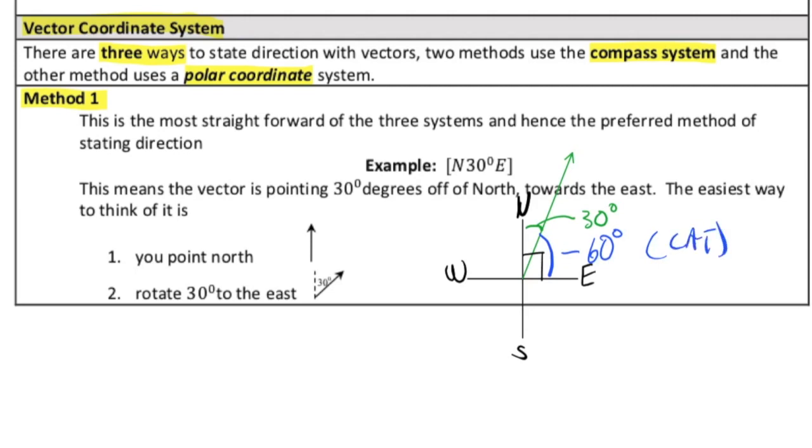Alternatively, we could have actually written this instead of north 30 degrees east, we could have done it this way. We could have started off east and rotated 60 degrees to the north. The alternate version of this would be east 60 degrees north, and that is an equivalent direction. The reason why I particularly prefer this particular notation, because it's a little bit more intuitive on how you're moving. It's much easier to read this. It's a direct read. You can see that it's north 30 degrees towards the east. I find this version to be a little bit easier to interpret, especially in comparison to the next method, which is the method that I don't prefer.